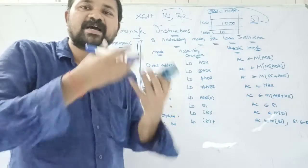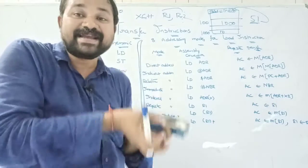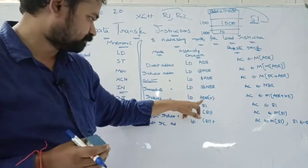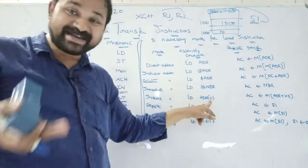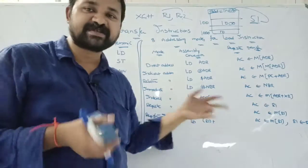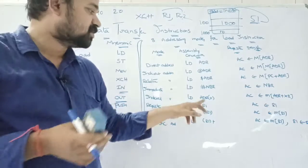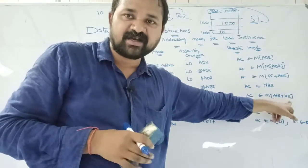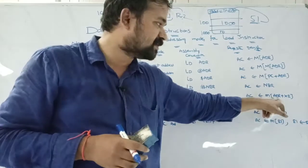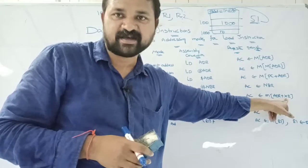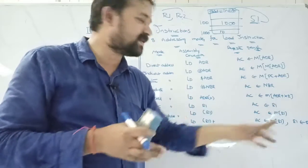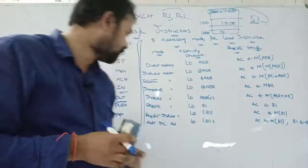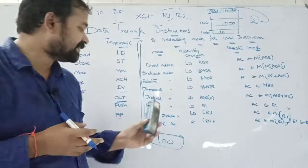Indexed addressing mode means we add the content of the index register (XR) to the address field to find the effective address. X specifies the index register, and 'ADR(X)' specifies the address with the index register. In register transfer form: 'AC ← M[ADR + XR]'. The content of the index register is added to the address field to give the effective address, and the memory word at that address is loaded into the accumulator.